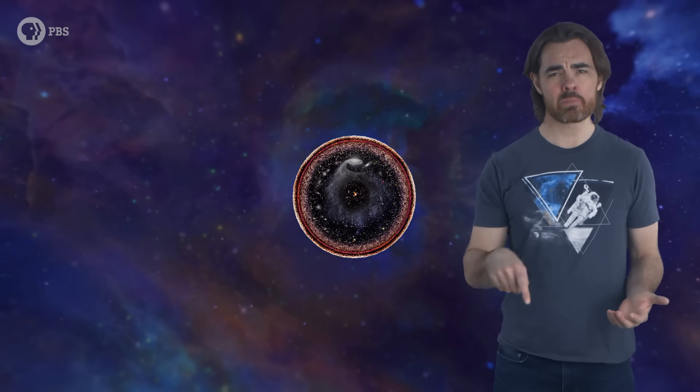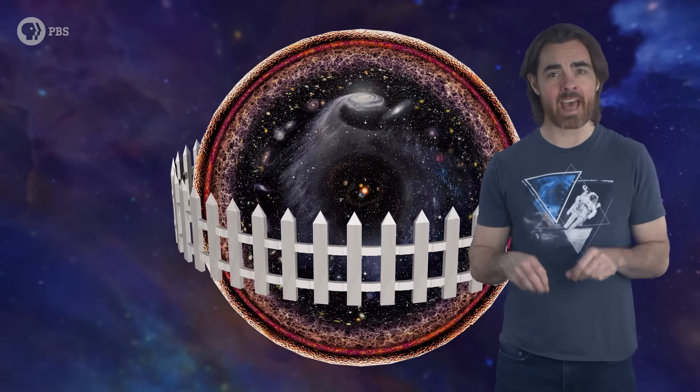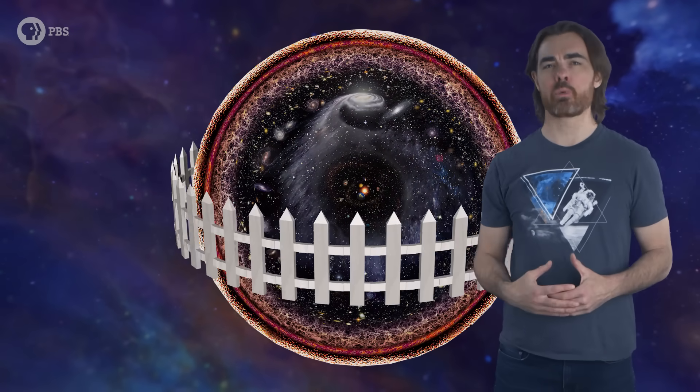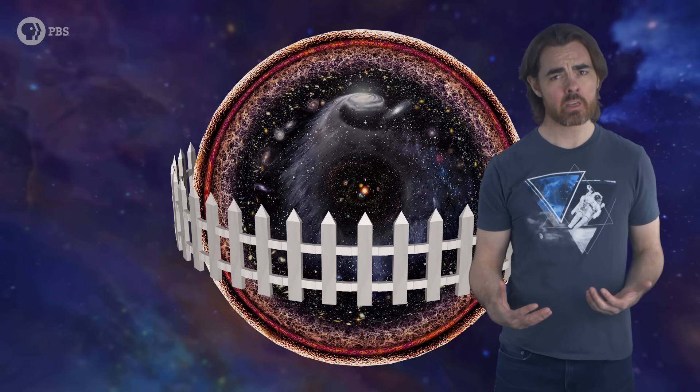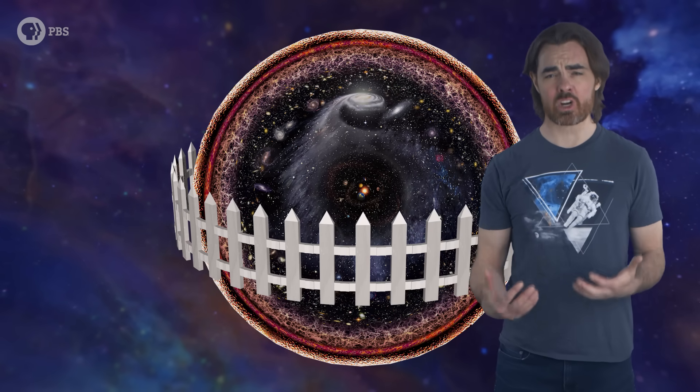Our observable universe is like a tiny patch of land in a vast plain. We define its horizon like we might build a little picket fence around our little patch – meaningless from the point of view of the plane. But it makes our patch feel more homey and us less crushingly insignificant.